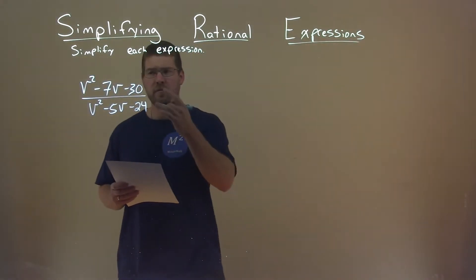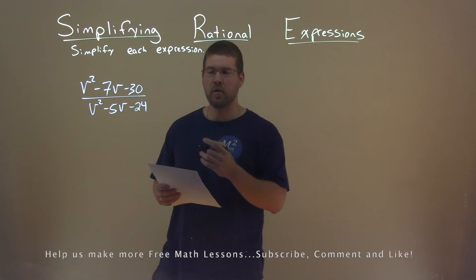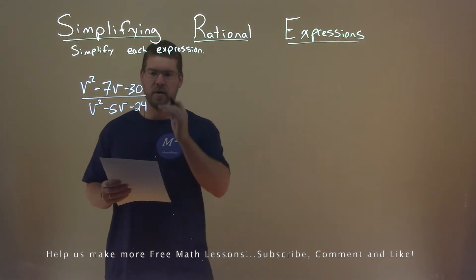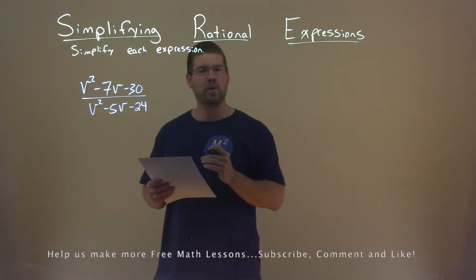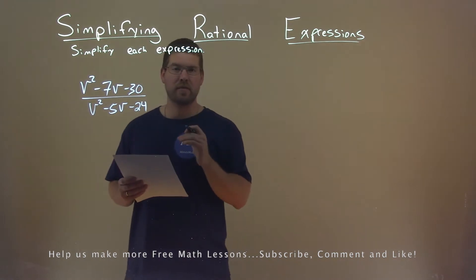We're given this problem right here: v squared minus 7v minus 30, all over v squared minus 5v minus 24, and we want to simplify this expression.